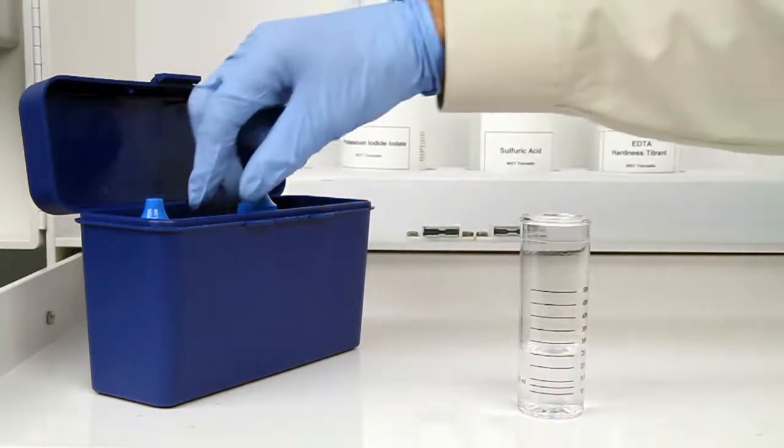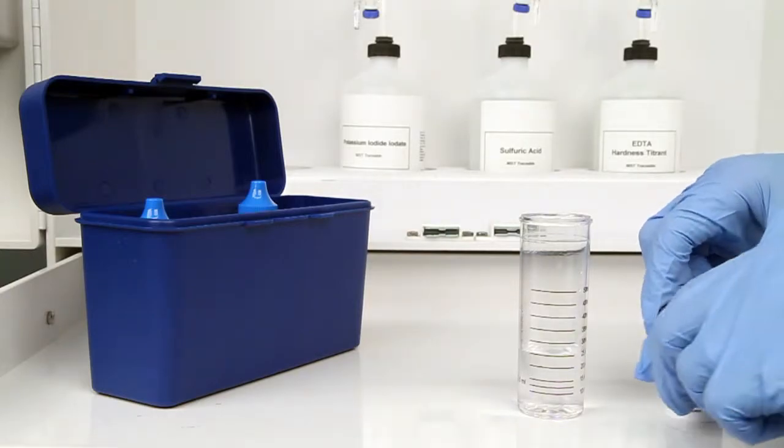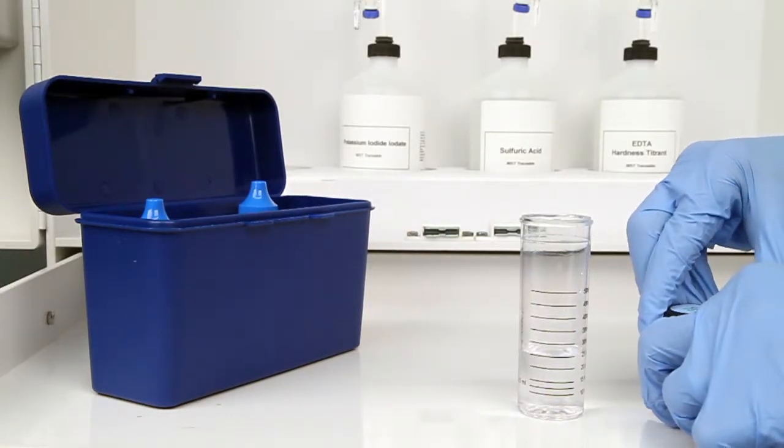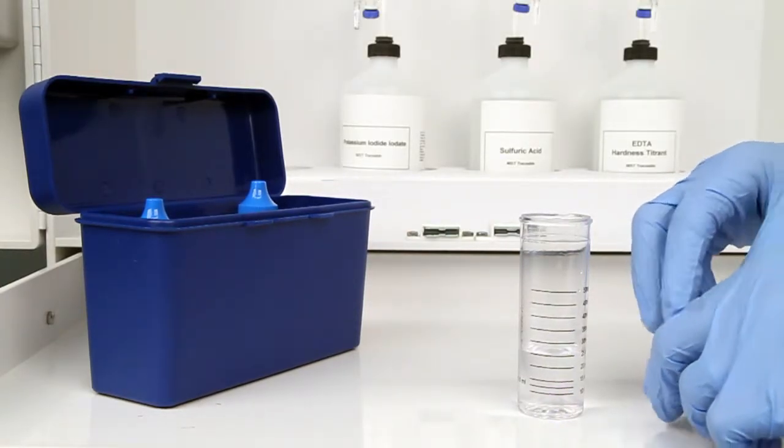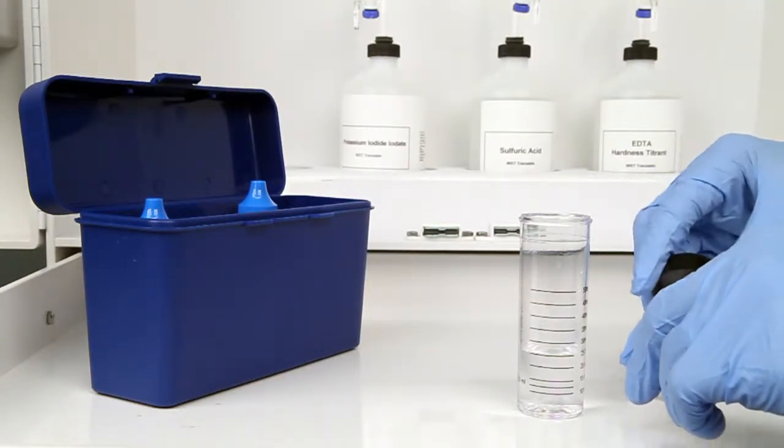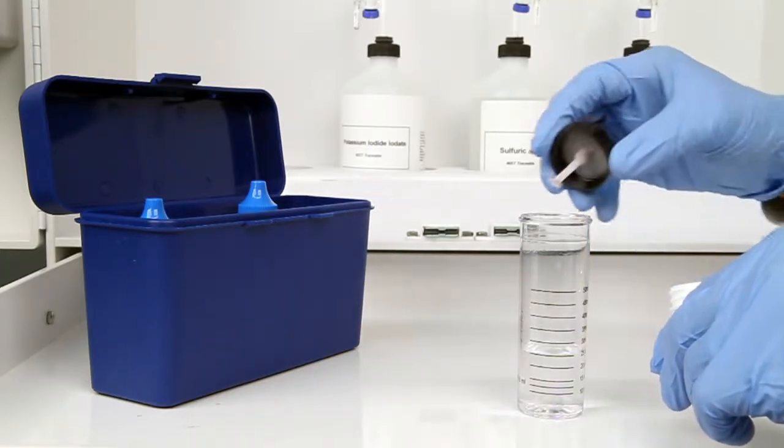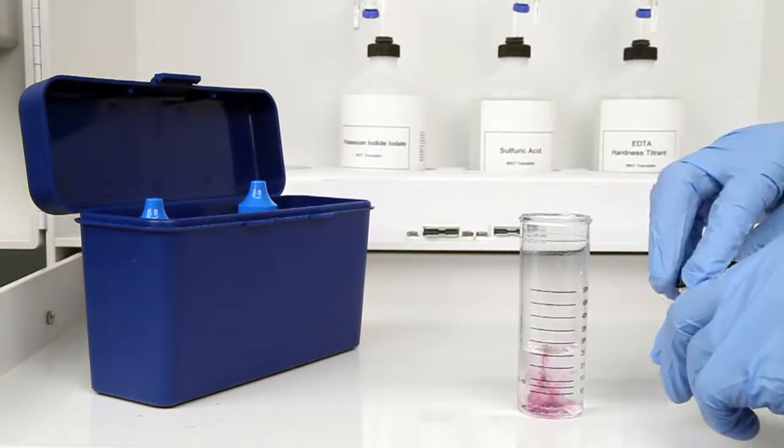The next step according to the Endpoint ID procedure is to add one scoop of hardness indicator powder. After the addition of the powder, swirl the vial to ensure the powder is completely dissolved.